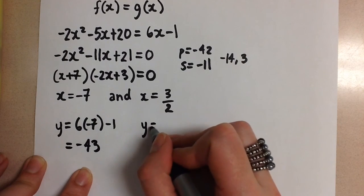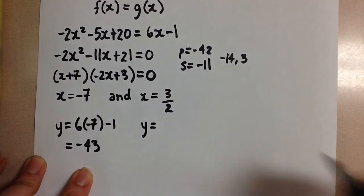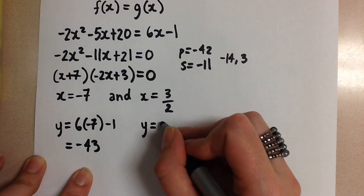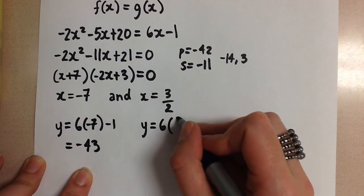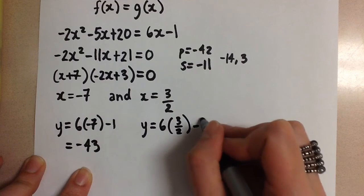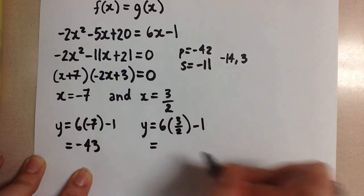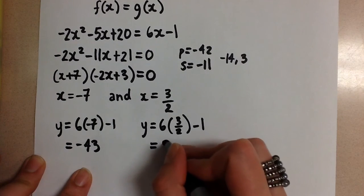And if x is 3 over 2, you can use 1.5 if you feel more comfortable with the decimal. We sub in the x value and get 6 times 3 over 2 minus 1. And this gives us positive 8.